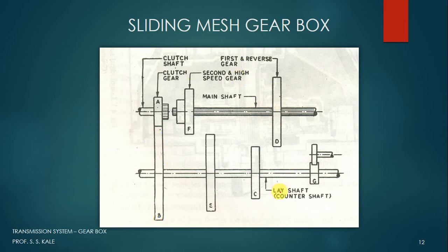The current position shows a neutral position. In neutral, the input shaft is rotating but the output shaft is not rotating. Gear A rotates, gear B rotates, and all gears on the lay shaft rotate, but they are not meshed with D or F, so D and F are not rotating and the main shaft is not rotating. The clutch shaft and lay shaft are rotating whereas the main shaft is stationary — that is the neutral condition.